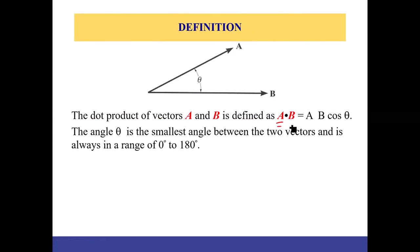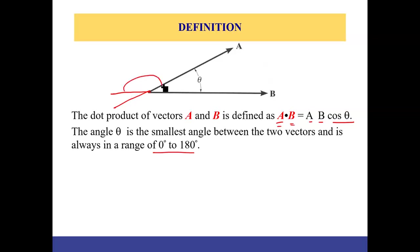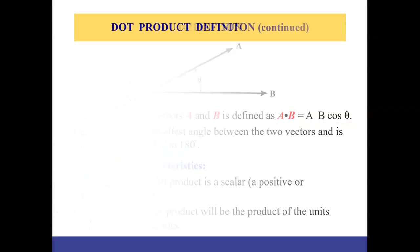The dot product of two vectors A and B equals the magnitude of vector A multiplied by the magnitude of vector B multiplied by the cosine of the angle between them. This angle is always the acute angle — the smallest angle between the two vectors — and it is in the range of 0 to 180 degrees.